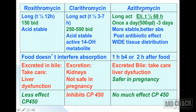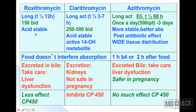Comparing the newer macrolides: roxithromycin has a half-life of about 12 hours; clarithromycin has a half-life of 3–7 hours; azithromycin has an elimination half-life of 68 hours — making it usable once daily at 500 mg per day. Roxithromycin is dosed at 150 mg twice daily; clarithromycin at 250–500 mg twice daily.